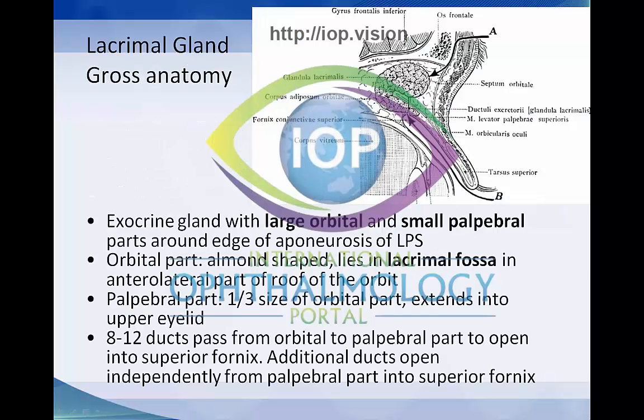In terms of the gross anatomy of the lacrimal gland, it's an exocrine gland with a large orbital and a smaller palpebral part around the edge of the aponeurosis of the levator palpebrae superioris. The orbital part is almond shaped and it lies in the lacrimal fossa in the anterior lateral part of the roof of the orbit.